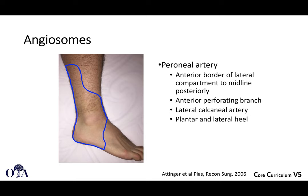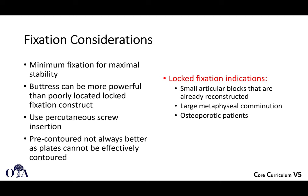For fixation considerations, you really don't want to go overboard — do the minimum fixation for maximal stability. Buttress can be more powerful than poorly located locked fixation constructs, so be thoughtful about where you place fixation to provide buttressing. Percutaneous screw insertions can be used when the pattern is simple enough, avoiding the need to open another long incision or mobilize a flap. Keep in mind that with so many pre-contoured plates available, they're not always better — sometimes they're not effectively contoured for what you need. Surgeon-contoured fragment plates can sometimes be helpful for certain fracture patterns, or at least as adjunctive fixation.